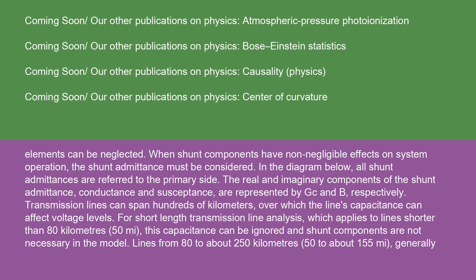Transmission lines can span hundreds of kilometers, over which the line's capacitance can affect voltage levels. For short length transmission line analysis, which applies to lines shorter than 80 kilometers (50 miles), this capacitance can be ignored and shunt components are not necessary in the model.